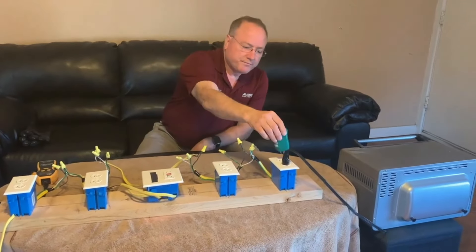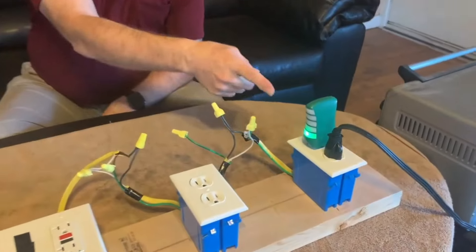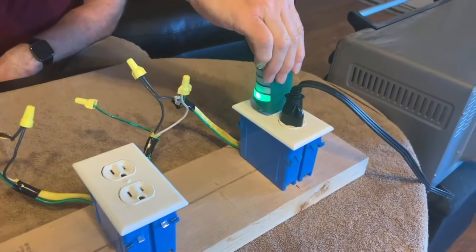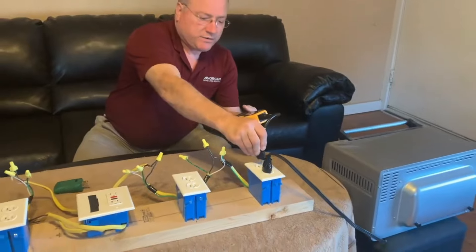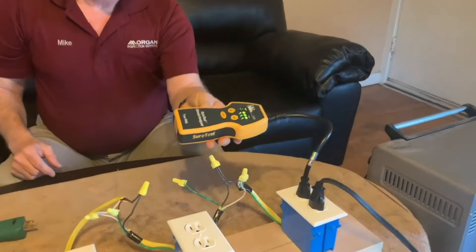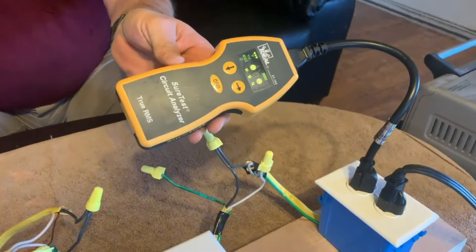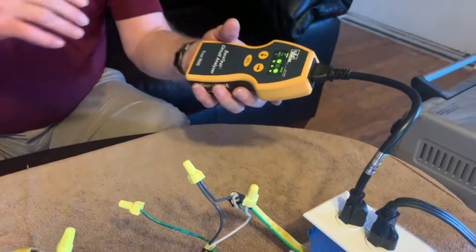So with a reverse polarity and a combination of false ground or bootleg ground, let me show you what you have. Again, this tester will show that everything's correct. You've got the green light. The SureTest circuit analyzer will also show, just like it did earlier, it'll show the flashing F for the false ground. So it is picking up that there's a problem.